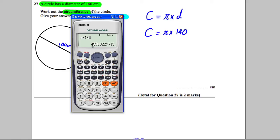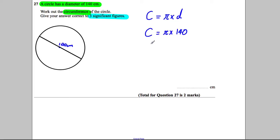Press the SD button and we get 439.82. So we're going to write C equals 439.82 centimeters. Now we're asked to give our answer to three significant figures.